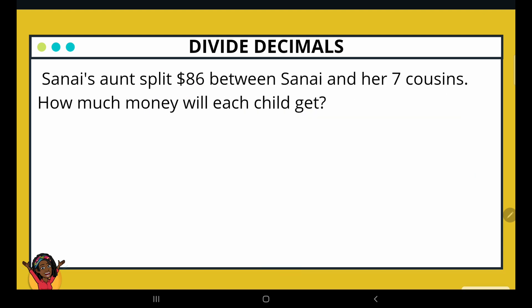Sanai's aunt split $86 between Sanai and her 7 cousins. How much money will each child get? So here we have that something is being split. The concept of splitting is division. So we have $86 between Sanai and her 7 cousins. Now, how many people will the money be split between? If you said 8, you are absolutely correct because Sanai is 1 and her 7 cousins. So 1 plus 7 would be 8. So here we have $86 divided by 8 people.